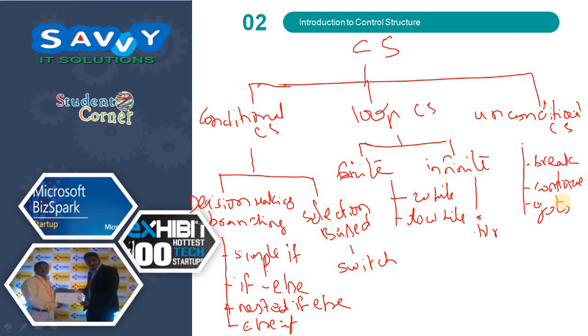This is the entire overview of control structures. We need to learn what is simple if with more examples. Similarly, if else, nested if else, else if, switch, while, do while, for, continue, break. We will take a number of examples.